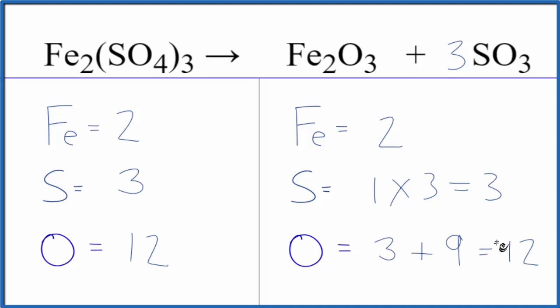This equation is balanced. The key here is to understand that the 3 applies to everything in the parentheses. When you count your oxygens, count the three here but don't forget about these. This is Dr. B with the balanced equation for Fe2(SO4)3 decomposing into Fe2O3 plus SO3. Thanks for watching.